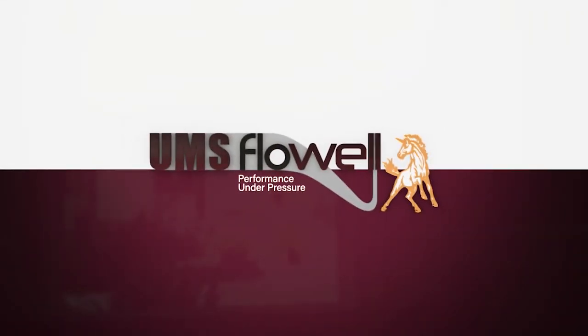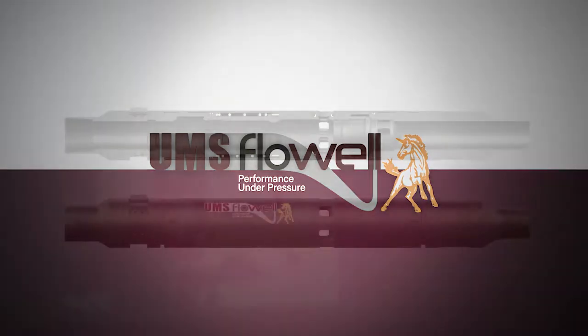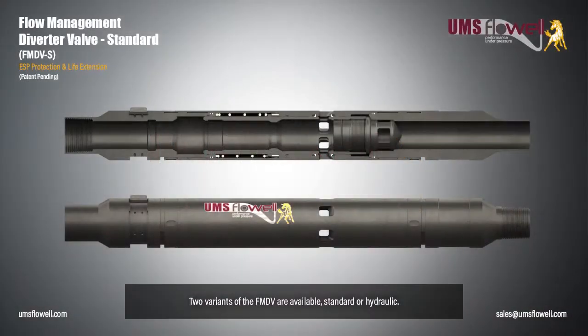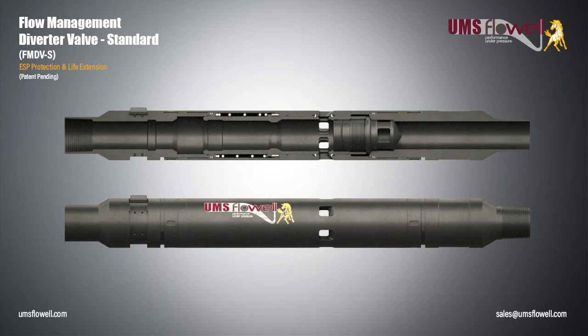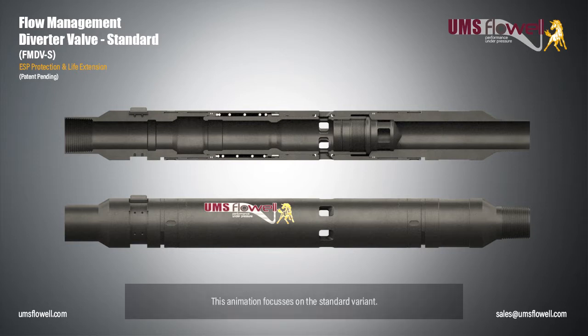UMS Flow Well. Performance under pressure. Two variants of the FMDV are available: standard or hydraulic. This animation focuses on the standard variant.